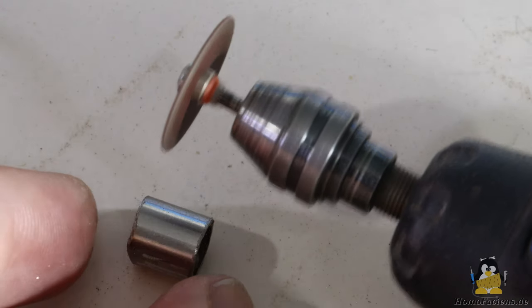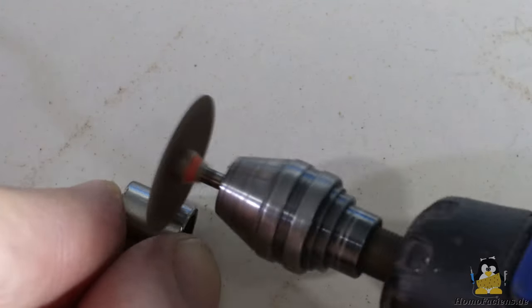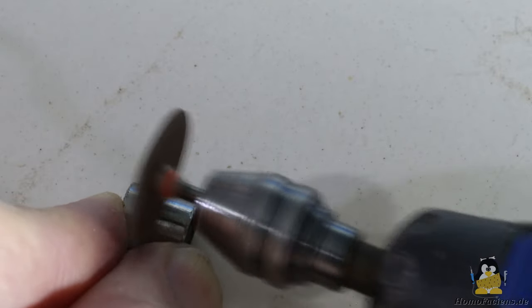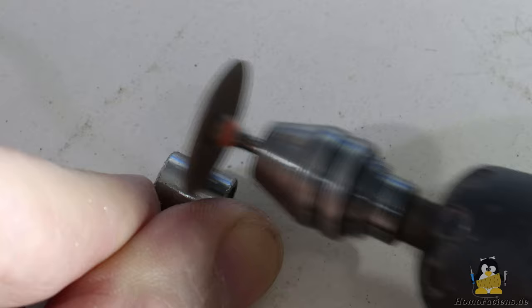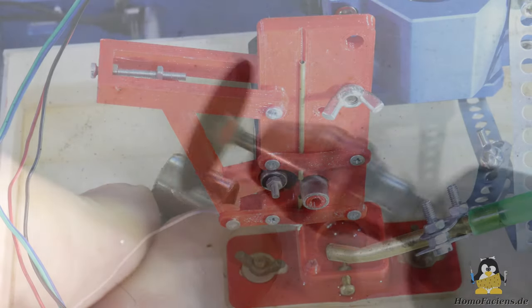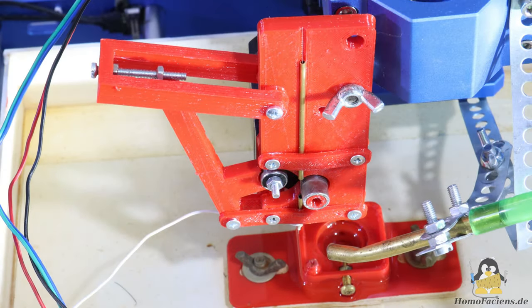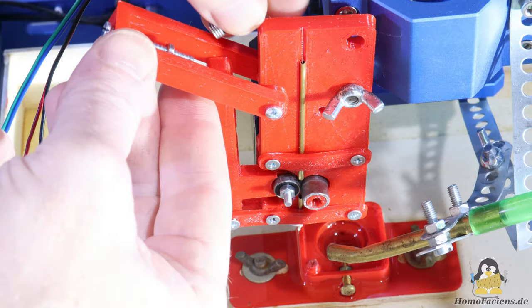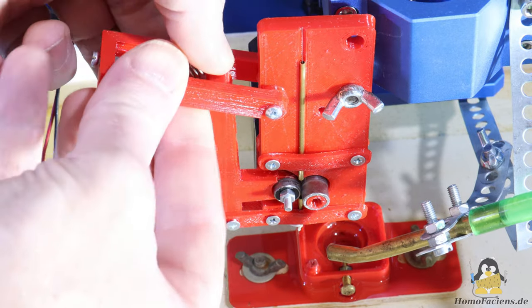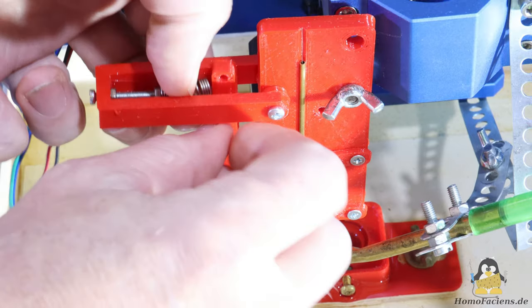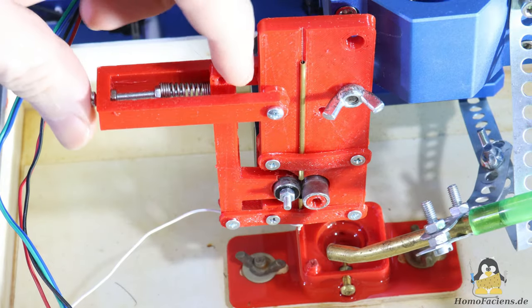On the stepper motor there is a piece of steel tube with an outer diameter of 10mm, which I roughened with a Dremel so that there is enough friction to move the wire. A ball bearing with an outer diameter of also 10mm serves as the counterpart. This ball bearing is pressed onto the stepper motor roller via a lever and a spring.